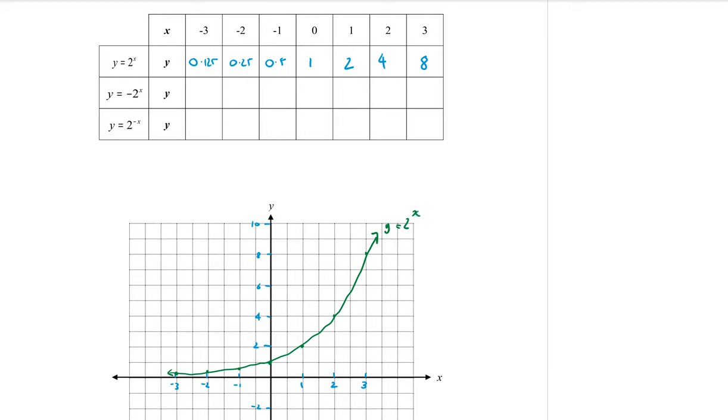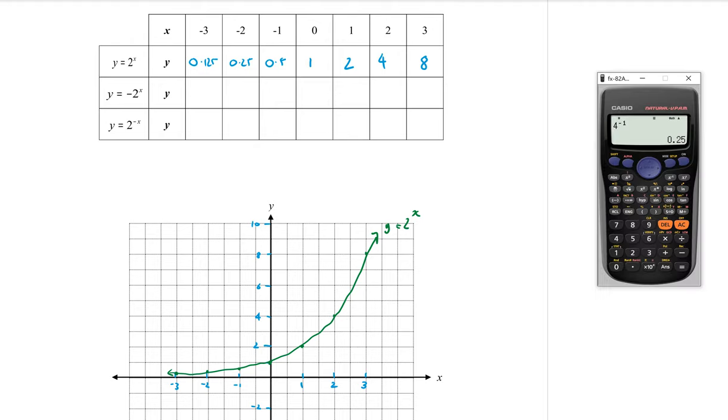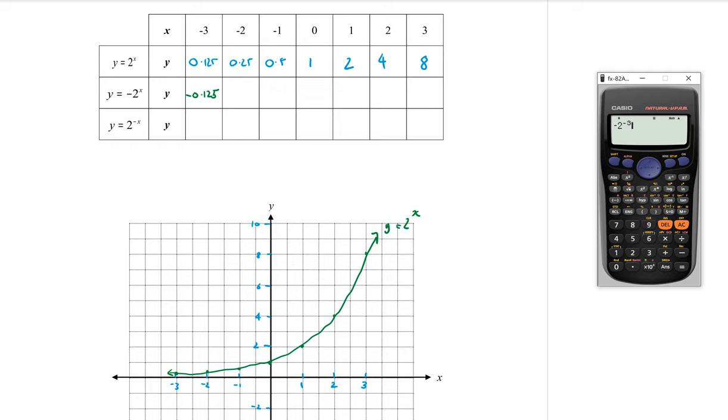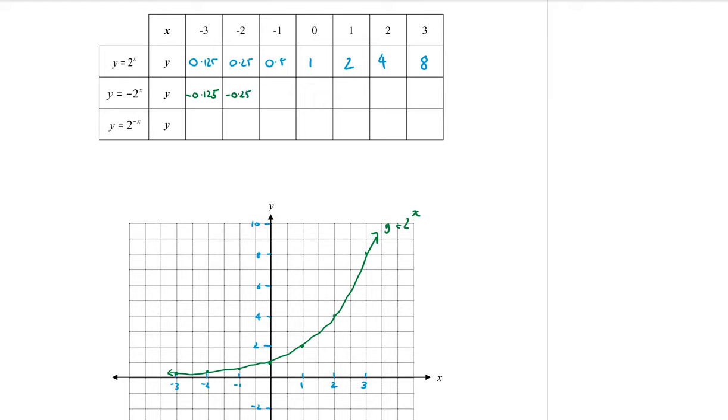But if we put a minus sign in front of that 2 to the power of x, what is that going to do to the graph? Well, let's type the first one in. We have minus 2 to the power of minus 3. It's the same decimal, but now it's negative, negative 0.125. And it's going to be like that for all of them. So it's all the same values as my first graph, but they have all now become negative.